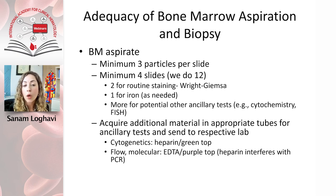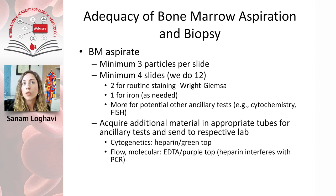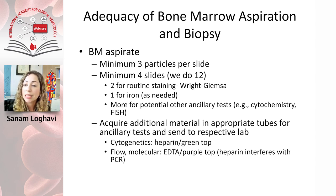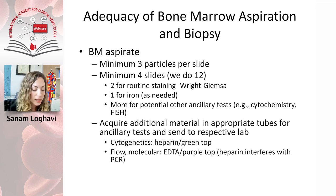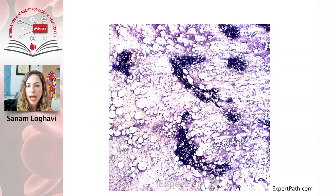You also want to be mindful of how you collect samples. Cytogenetics can use a heparin green-top tube, while the molecular laboratory tends to use EDTA or a purple-top, because heparin can interfere with some PCR studies. Here's an example of a good aspirate — the white holes are the fat and the purple blobs are the particles. On higher power, an optimal aspirate smear shows different cells: nucleated red blood cells, different myeloid cells at various stages of maturation, and a megakaryocyte.